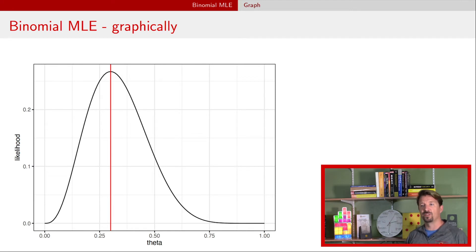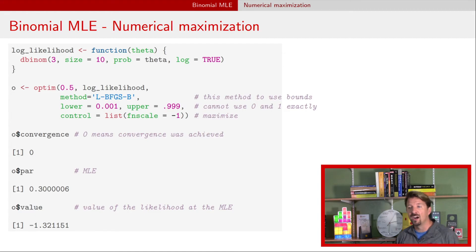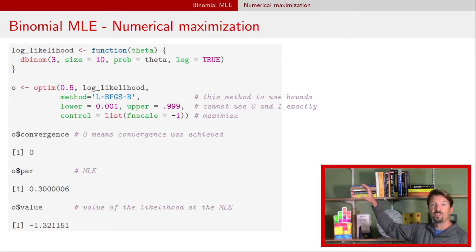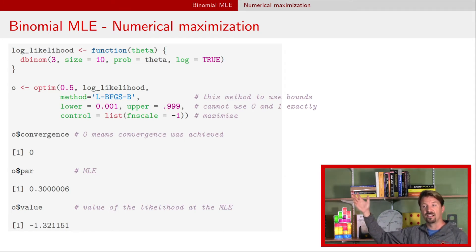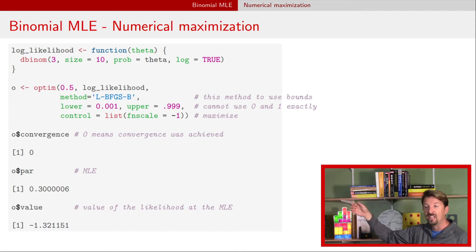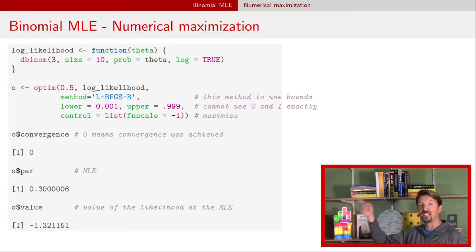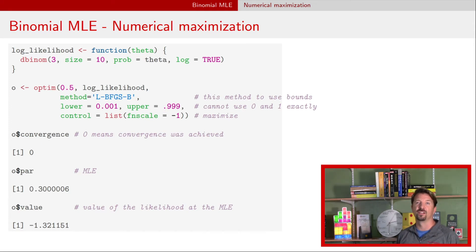I'm going to provide a third way for those who are not so mathematically inclined: using a computer to find that maximum for us. Here we're using R to do the calculations. The top couple of lines define the log likelihood in R syntax. We have dbinom — that's the probability mass function for our binomial distribution — but now the parameter of that distribution is theta, the probability of success that we don't know. We use the log equals true argument, which ensures we're using the log likelihood, which is numerically more stable than the likelihood.